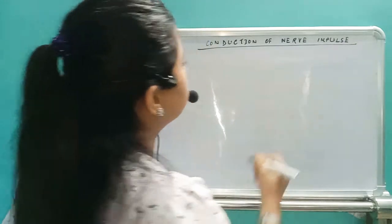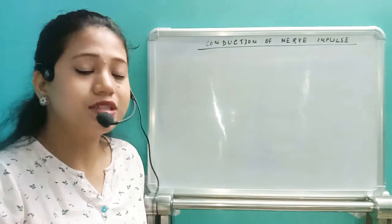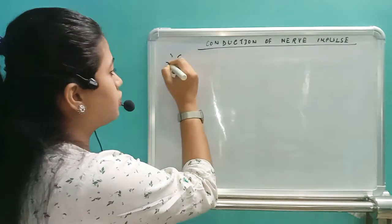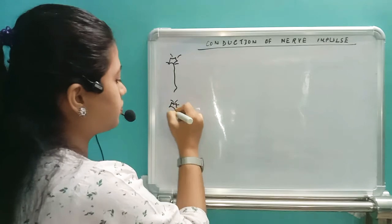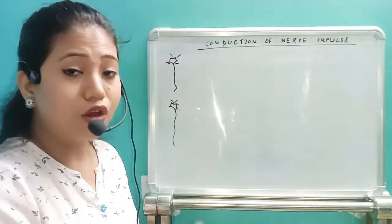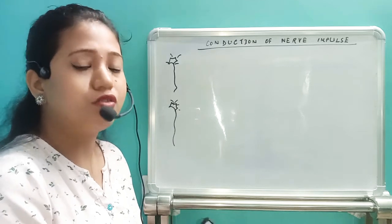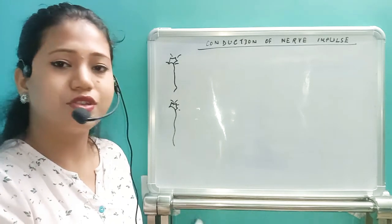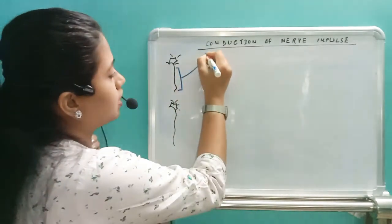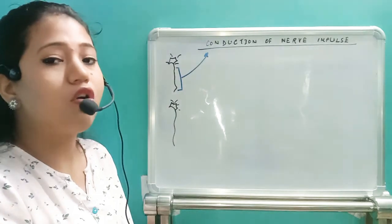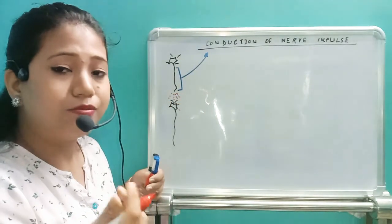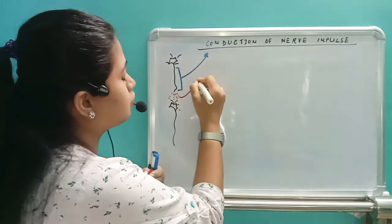First of all, you need to know the difference between two words: conduction and transmission. The neurons which take the impulse to the central nervous system — millions of neurons are present in a nerve fiber taking the impulse from the receptor organ to the central nervous system or from the CNS to the effector organ. If the impulse is moving within the neuron, it is called conduction. But if propagation occurs from one neuron to the next neuron by the presence of neurotransmitters, that is called transmission.